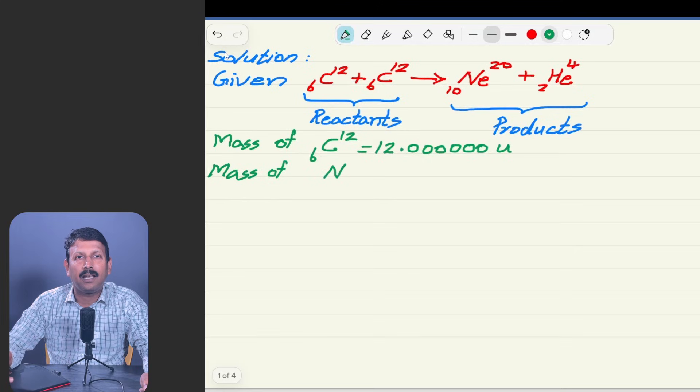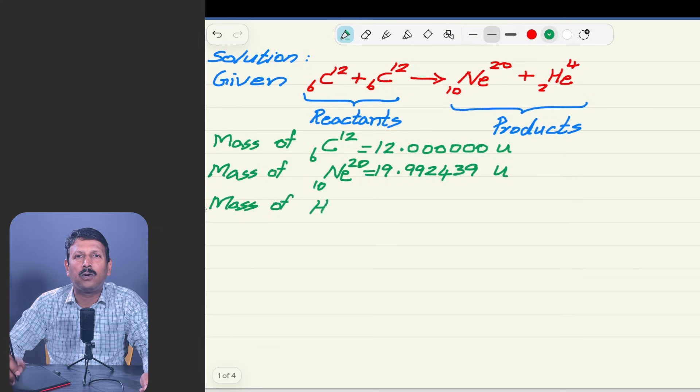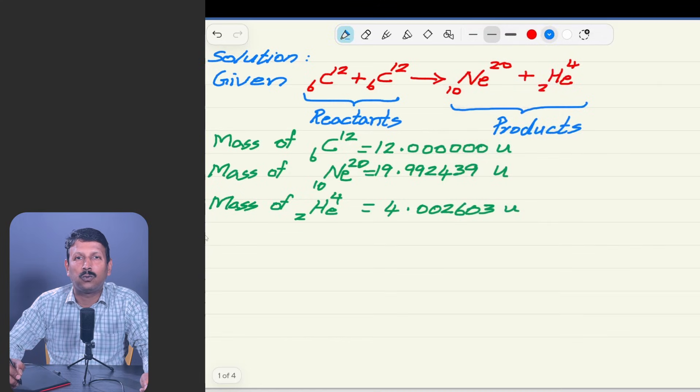And that is the left side reactants ready now. There are two such atoms. So, when we do the calculation we will multiply by two. And on right side the products there are two. First one we will write for the first part: mass of Ne₂₀¹⁰ is equal to 19.992439 u. And the second, the helium He₄², mass of He₄² is equal to 4.002603 atomic mass units.